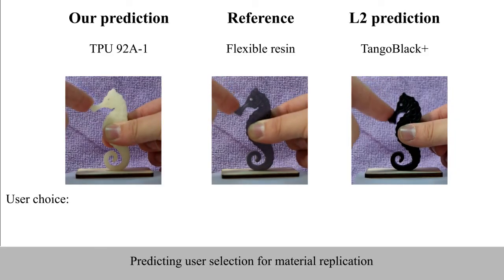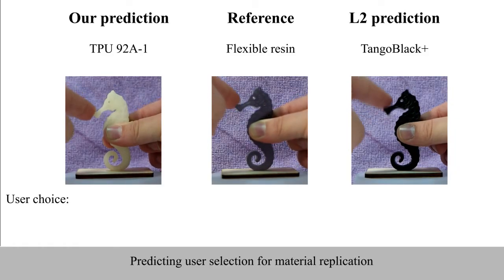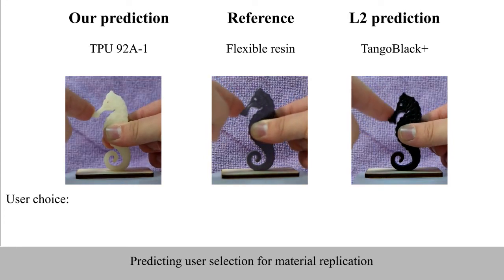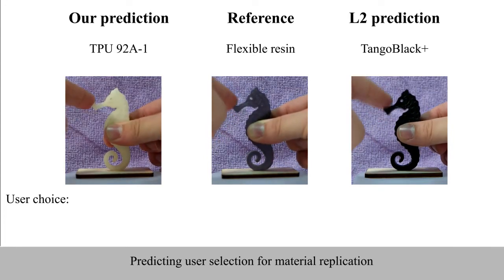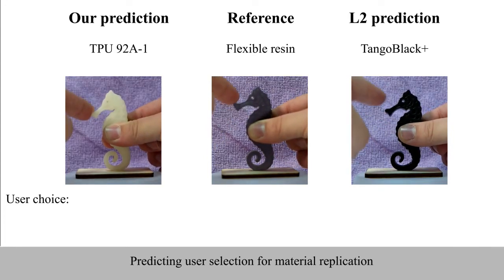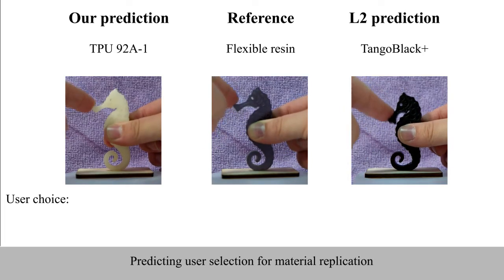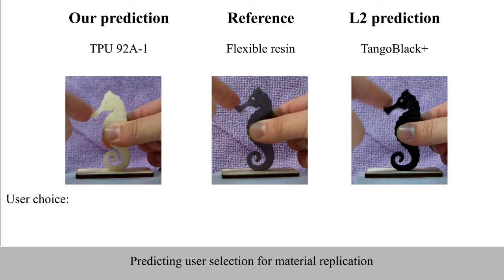During our second study, users were presented with three seahorses made from different materials. One seahorse was set as the reference and the task was to pick the best reproduction from the two remaining seahorses.